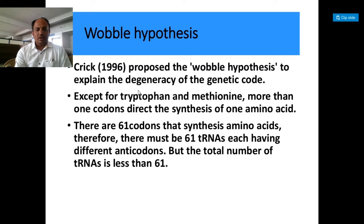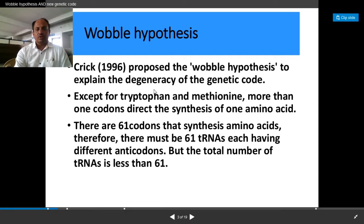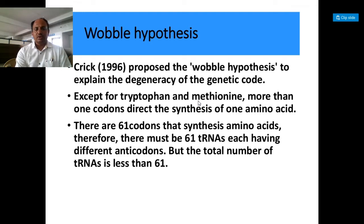It means there are some amino acids which are specified by more than one codon. Or we can say more than one codons are responsible for, or which specify, one amino acid. But there are some exceptions. One is tryptophan, and another one is methionine. So for methionine and tryptophan, there is only one codon. But for other amino acids, there are many codons that specify that one amino acid. And this property or characteristic of genetic code is called as the degeneracy of a code.